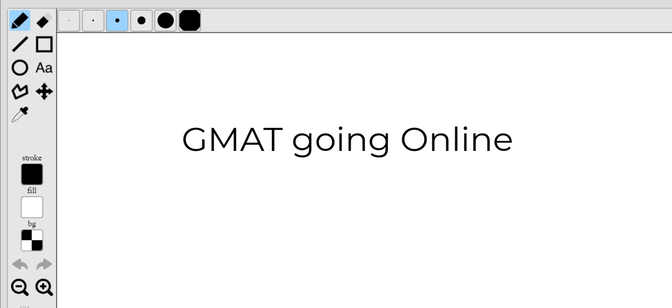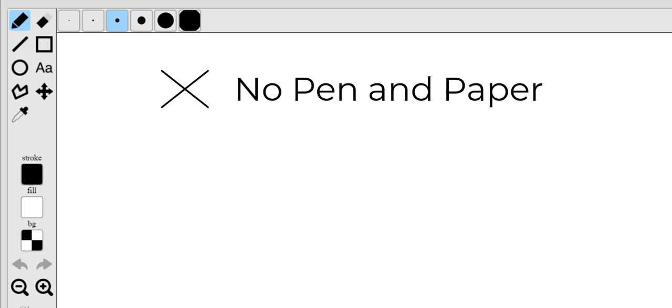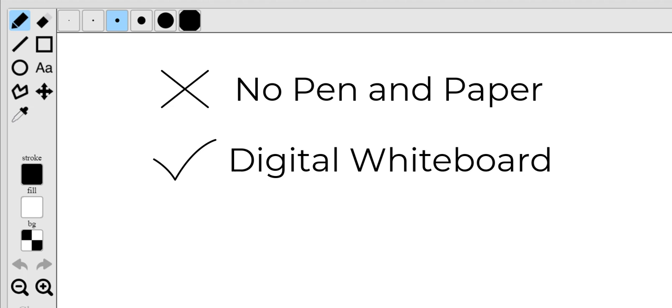It means that if you're taking the GMAT online, you do not have access to a traditional pen and paper scribbling pad. Instead, you would have to use what is called a whiteboard.